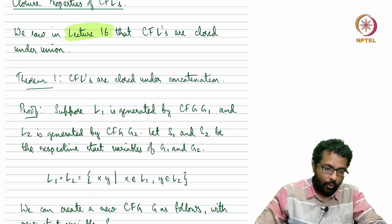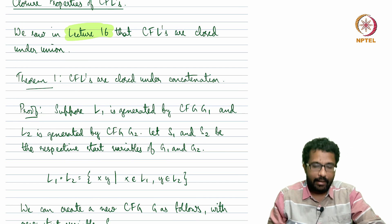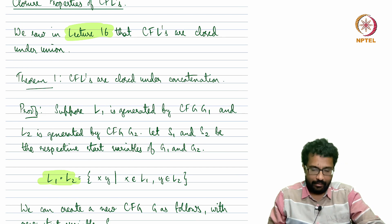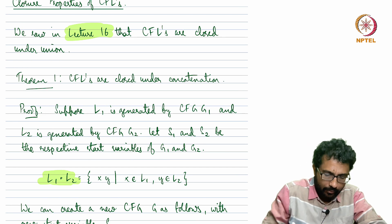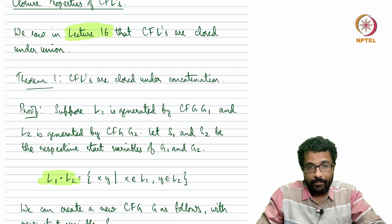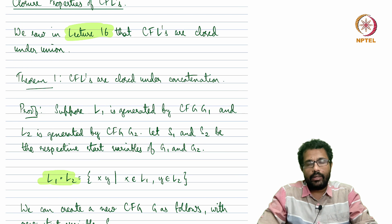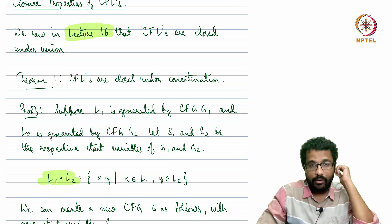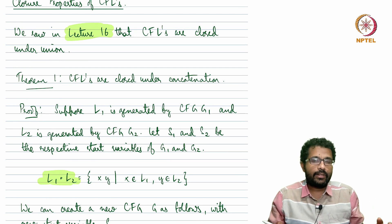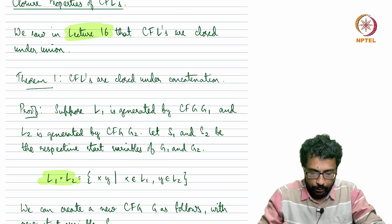Let us recollect what concatenation was. If L1 is a language and L2 is a language, the concatenation of L1 and L2 is the set of all strings xy, the concatenation of all strings x and y, where x is a string from L1 and y is a string from L2. Basically it is the set of all concatenations where the first string comes from L1 and the second string comes from L2.